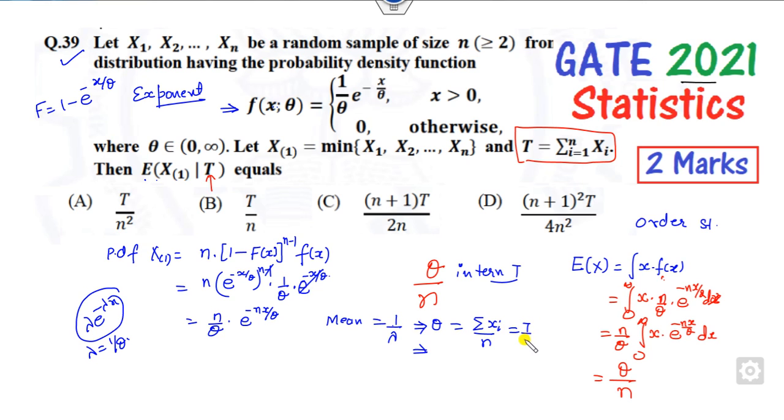can write the mean as T/n. You can substitute this value, so the right answer is T/n. This is a simple way to solve this order statistics question.